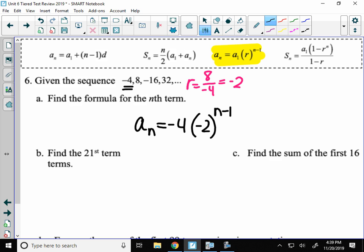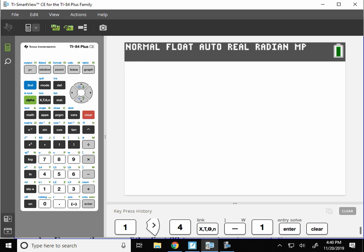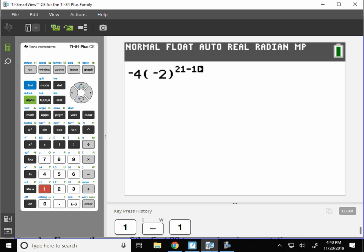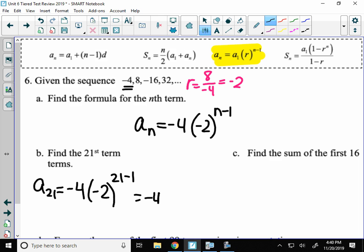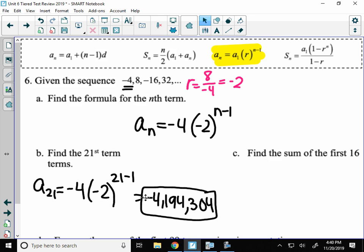Now I can use that equation to find the 21st term. So I have a_21 equals the first term times the common ratio to the 21 minus 1 power. And I can just type that into my calculator and get the term value. So let's see, negative 4, make sure you put the r value in parentheses. And that is the term. Negative 4,194,304.